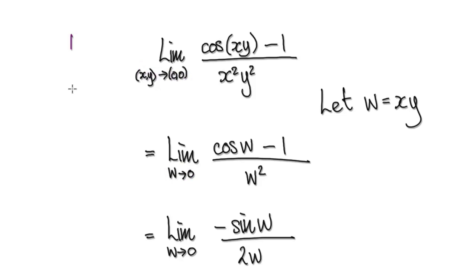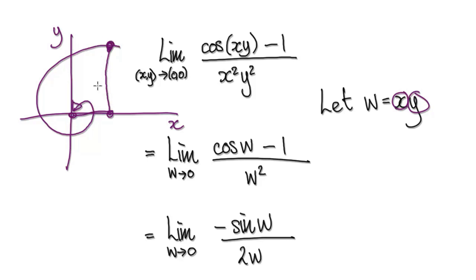Because if you look at the domain plane, no matter how you approach the origin, let's say you are currently here, x times y represents the area of this rectangle. As you approach the origin, notice that the area of the rectangle gets smaller and smaller. So as you approach the origin, the area w becomes smaller and smaller. It will have the same effect.